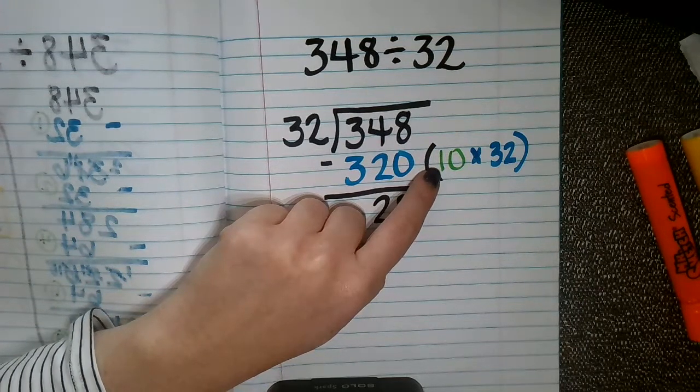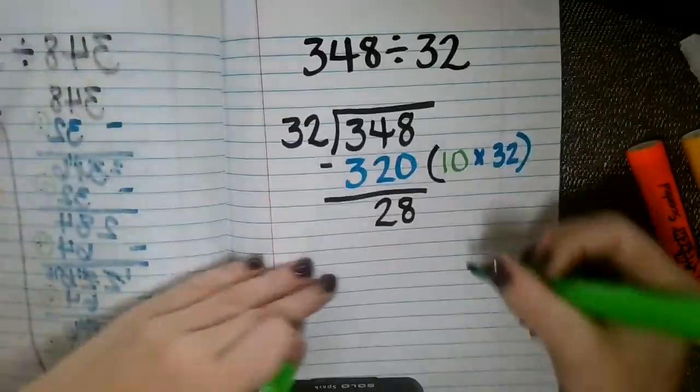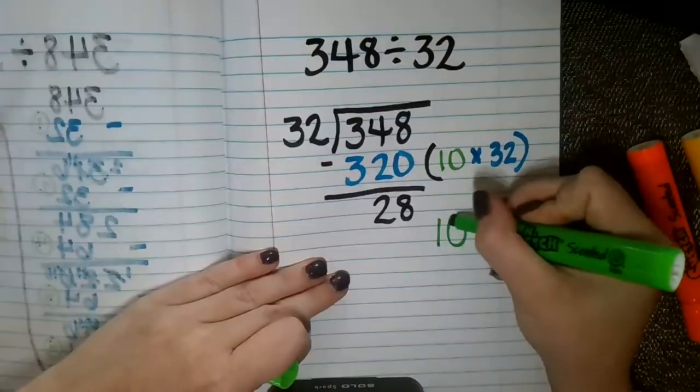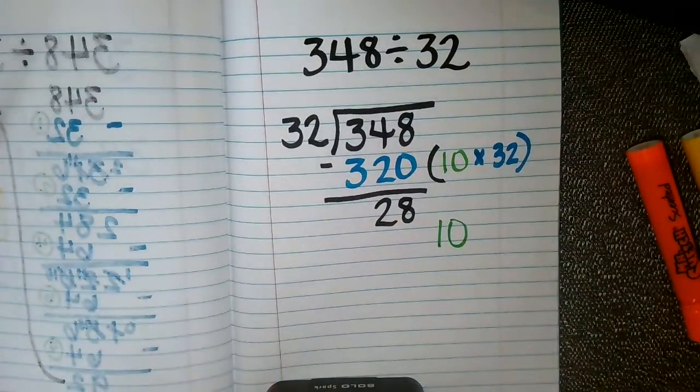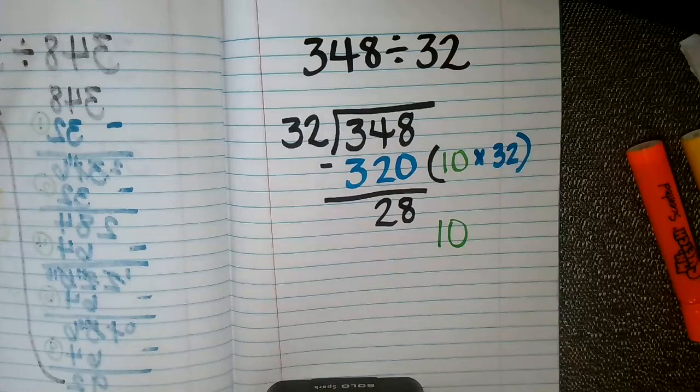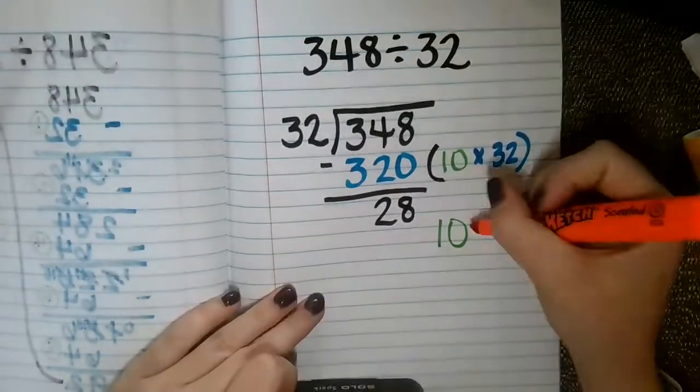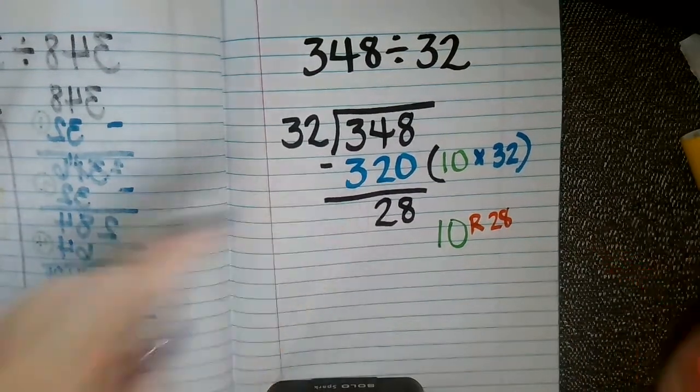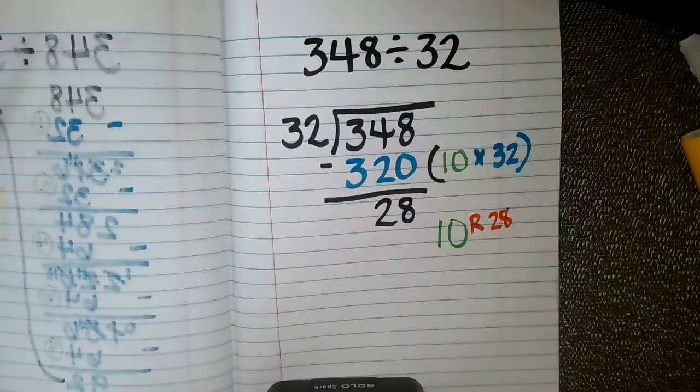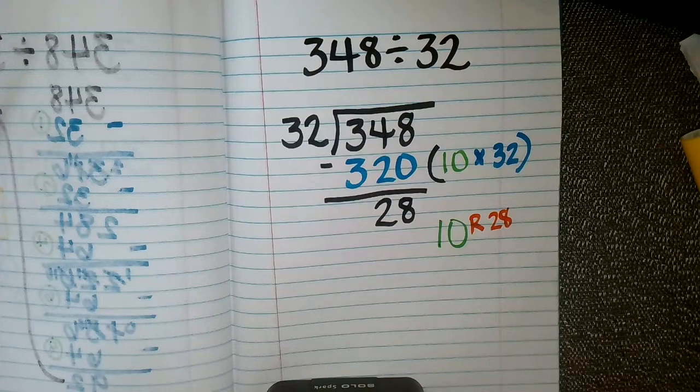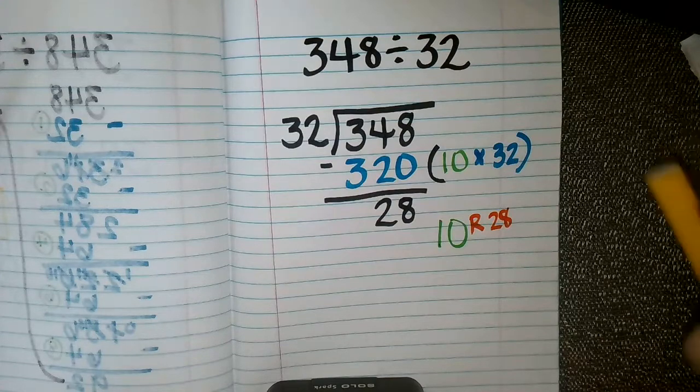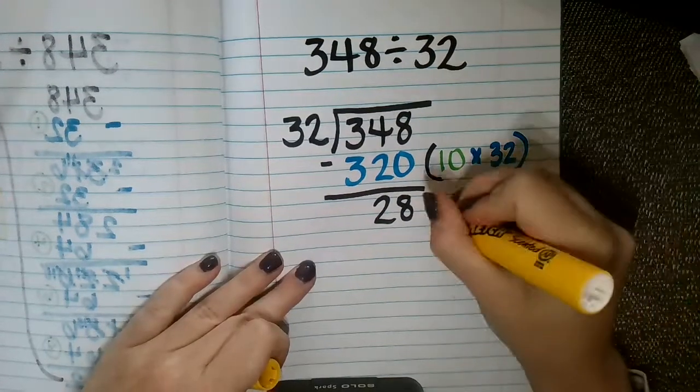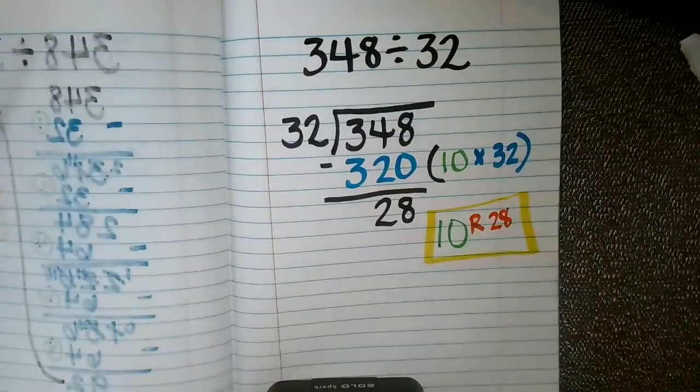So in this case, we only multiplied times 10. So I would know that with partial quotient, my answer is going to be 10 with a remainder of 28 because I know that 32 cannot be multiplied times anything to equal 28. 28 is less than 32. So I have my answer.